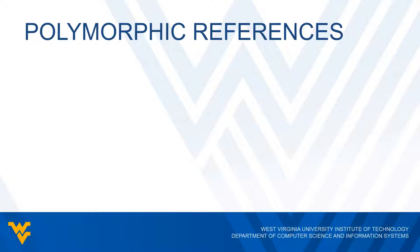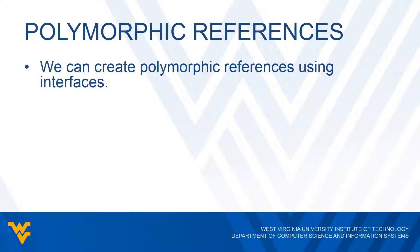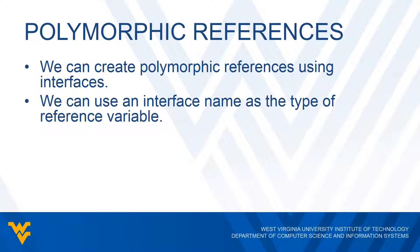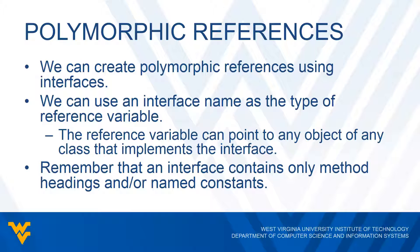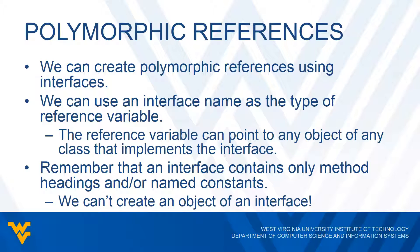Just as we can create polymorphic references to classes in an inheritance hierarchy, we can also create polymorphic references using interfaces. We can use an interface name as the type of a reference variable, and that reference variable can point to any object of any class that implements the interface. However, because an interface contains only method headings and named constants, we cannot create an object of an interface — we still have to create a class that implements it.